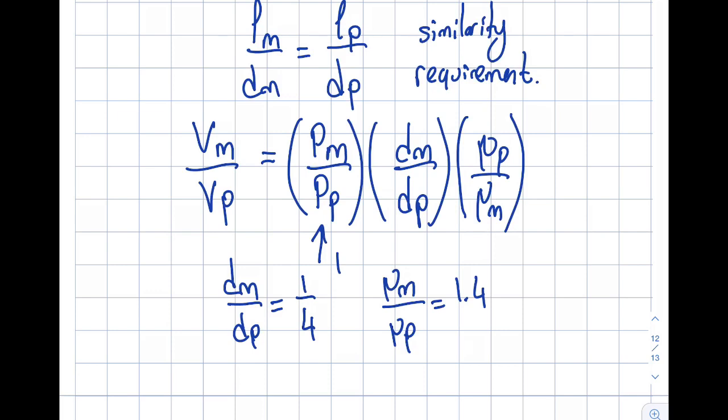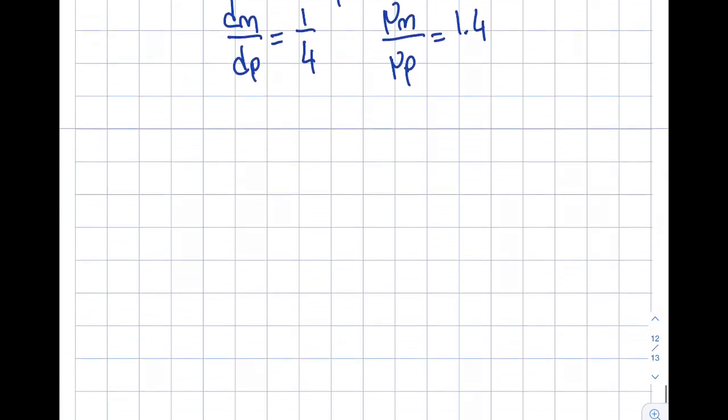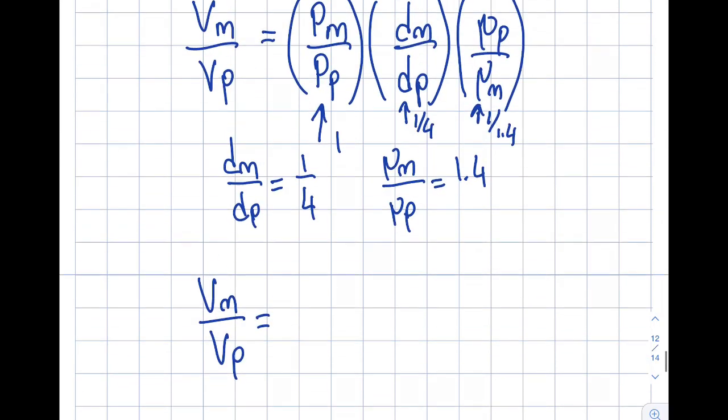So then I'm going to insert this here as one over four, and over here I'm going to insert this 1 over 1.4, because I'm writing viscosity_prototype divided by viscosity of the model, so this is inverse of that. So from here, what I'm going to get is Vm over Vp is equal to 1 over 5.6. So this is my final answer for the part.